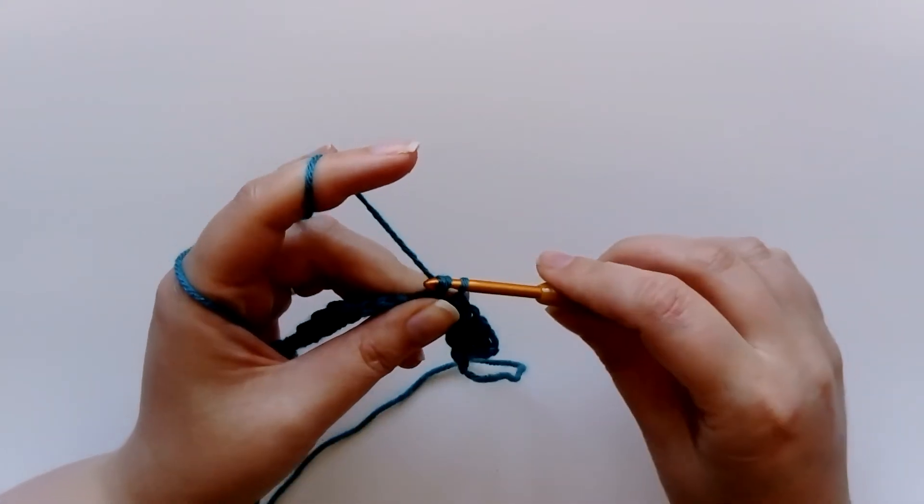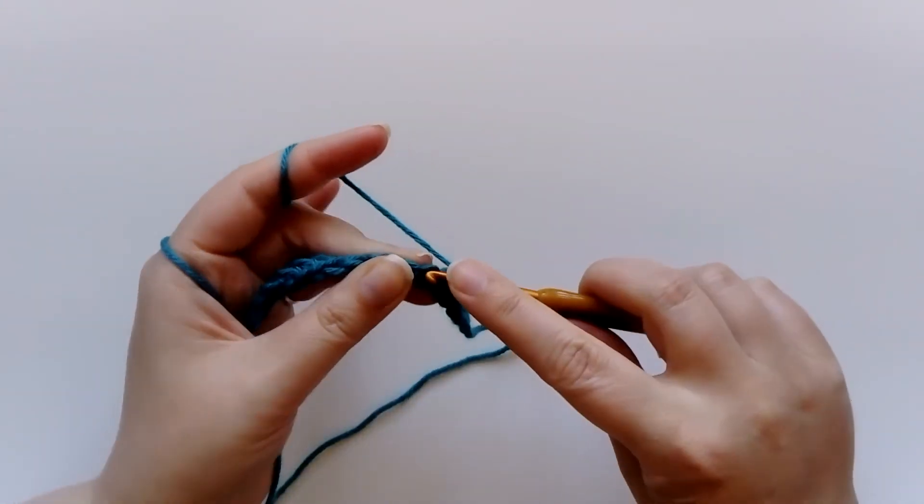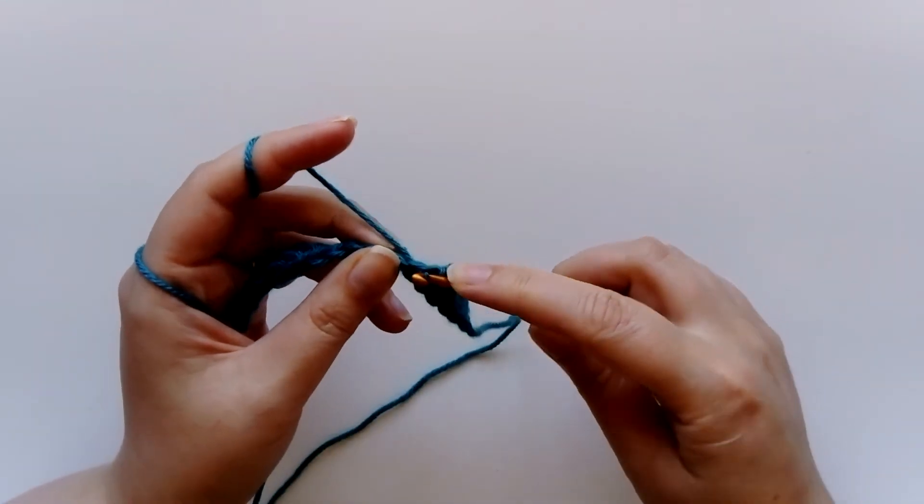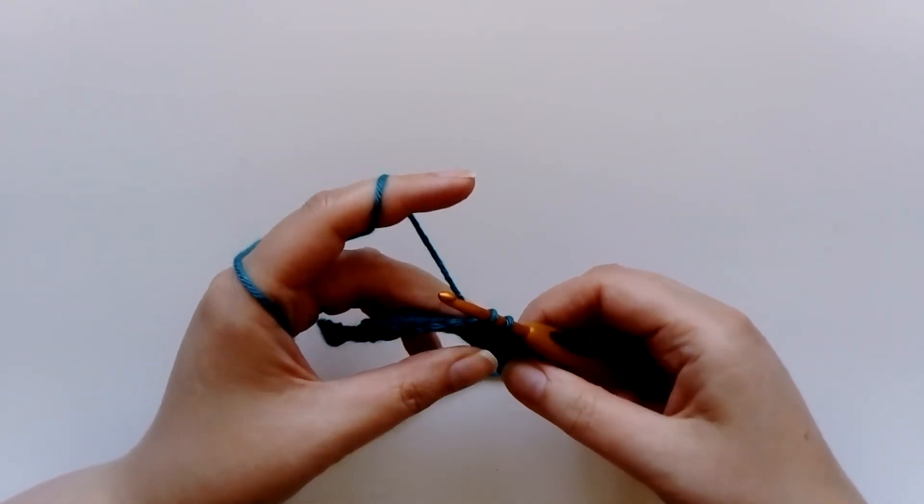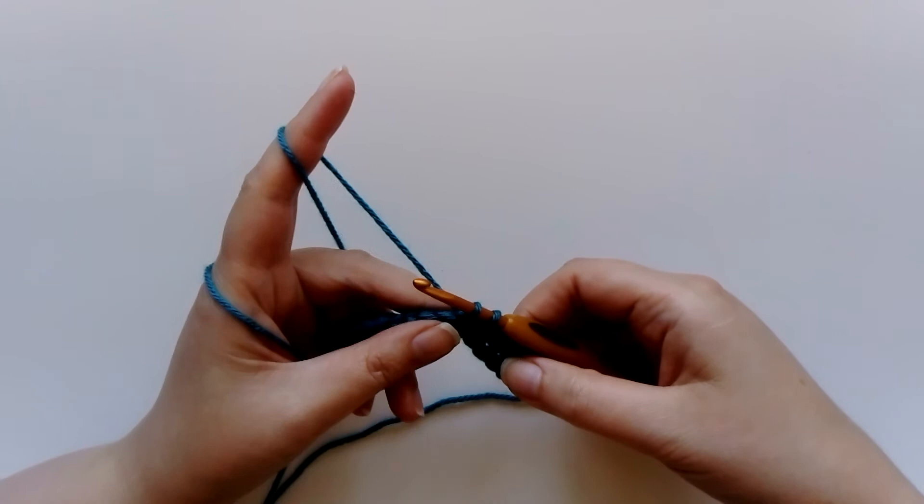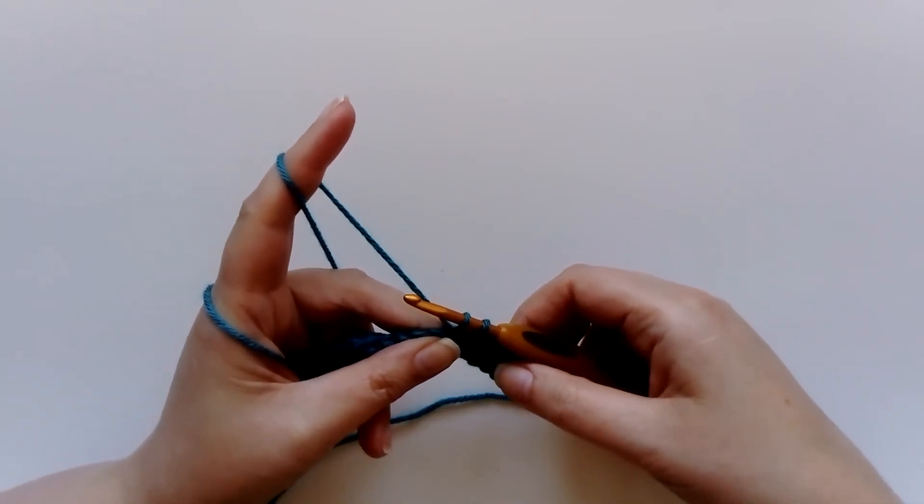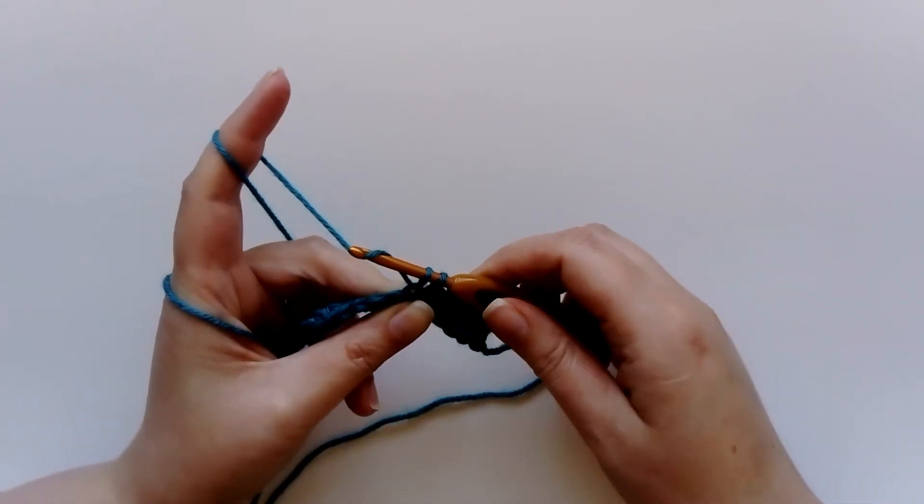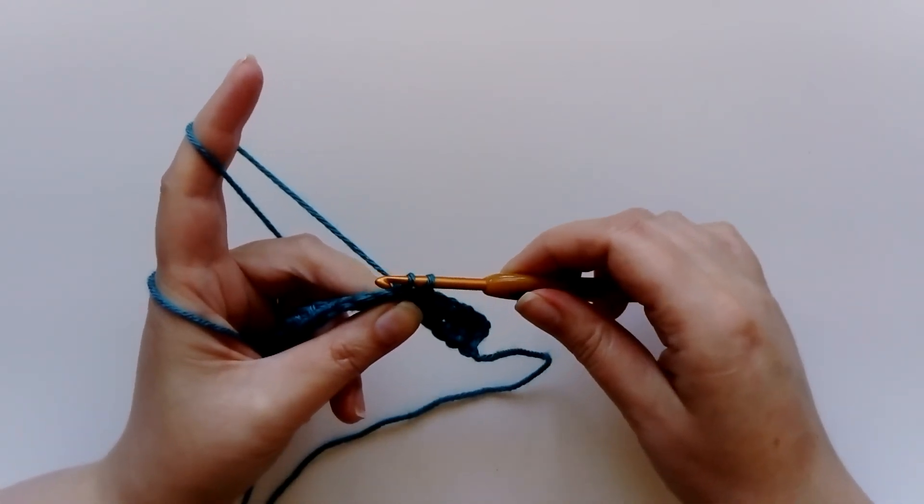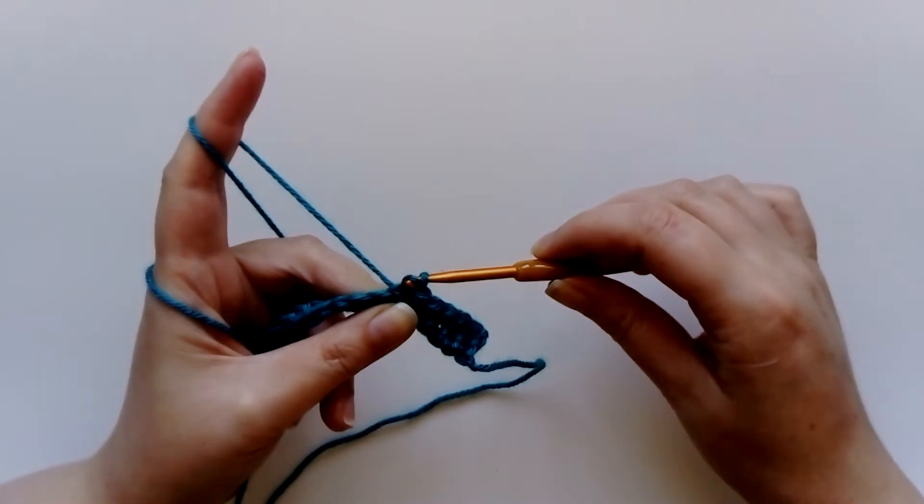If you get to here, be careful. A lot of people at this point when they're learning will accidentally do a slip stitch. So when you've got two loops on your hook, the next thing to do is wrap that yarn over. Don't be tempted to pull the front loop through the back loop. That's something else that's called a slip stitch, and I'll perhaps talk about that in another video.